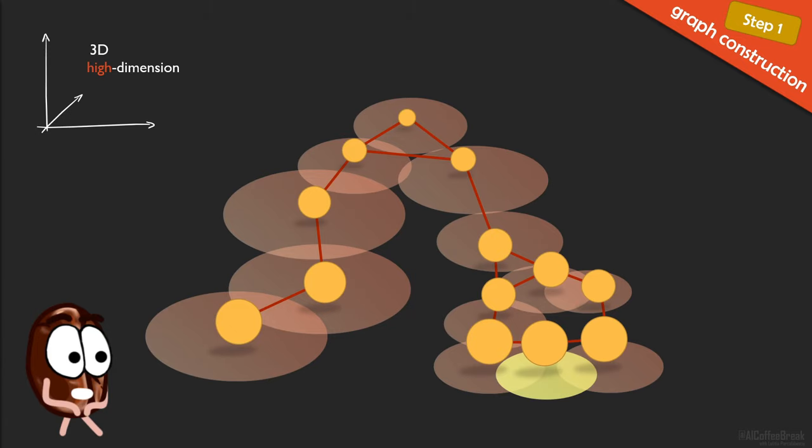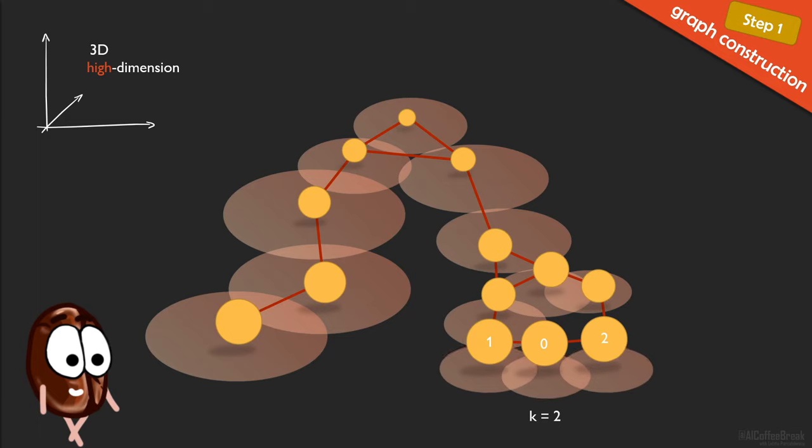But UMAP does not estimate density directly as a number, but uses a proxy. The density is estimated to be higher when the kth nearest neighbor is close and lower when the kth nearest neighbor is far away. Notice that this k in kth nearest neighbor is a hyperparameter that we need to choose, because with its help UMAP makes a density estimation to find the right local radius.